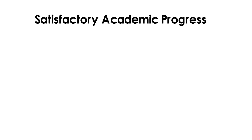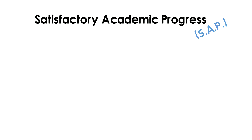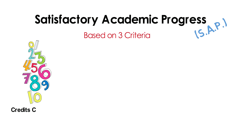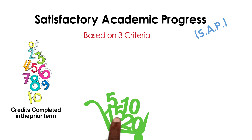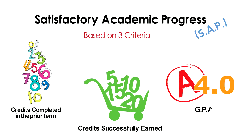Satisfactory Academic Progress, or SAP, is reviewed every term at the end of the semester and is based on the credits you completed in the prior term, the credits you successfully earned, and your GPA.